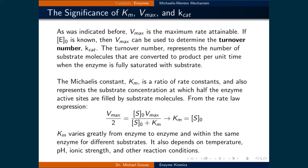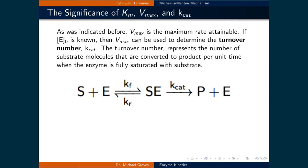As was indicated before, Vmax is the maximum rate that's attainable. If the initial concentration of the enzyme is known, then the maximum rate, Vmax, can be used to determine the turnover number, or Kcat. Recall that Kcat is the rate constant governing the reaction between the substrate enzyme complex and the product. So the turnover number represents the number of substrate molecules that are converted to product per unit time when the enzyme is fully saturated with substrate.